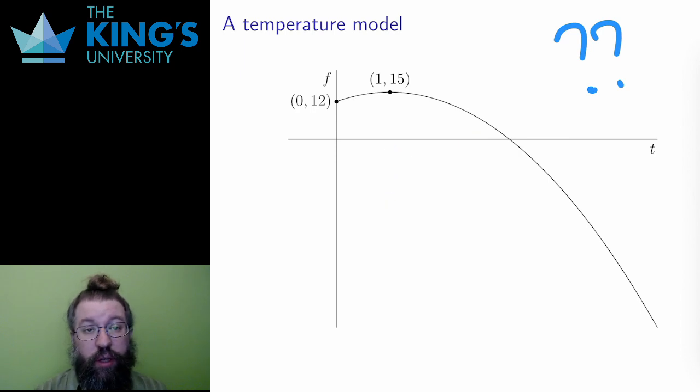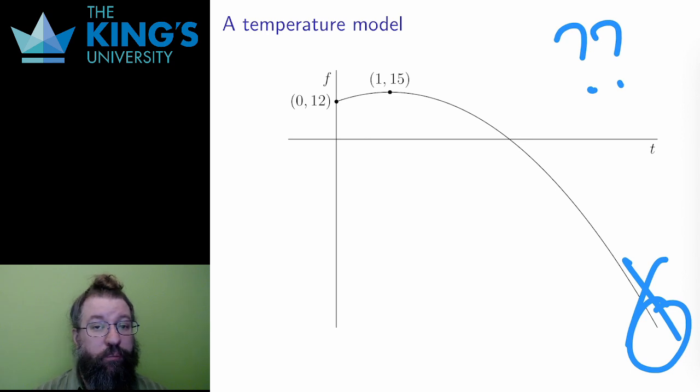However, in the long run, the temperature becomes a very large negative number, and that is not reasonable. Even if this is something cooling in the vacuum of space, it eventually cools to absolute zero, not negative infinity. The model is good for a while, and then it is poor. And this is often the case.